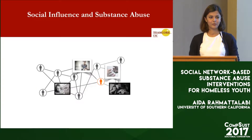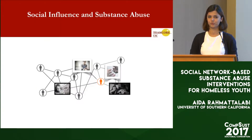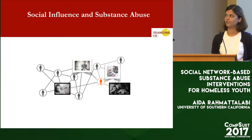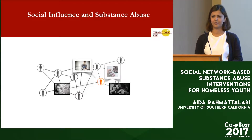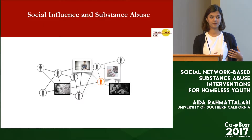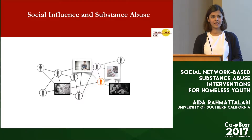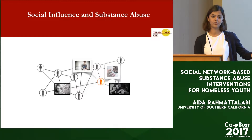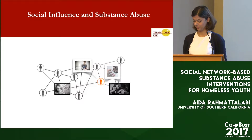Social networks have repeatedly been shown as significant covariates of substance use, meaning that, for example, if a person's group of friends has norms that favor using drugs, he's also very likely to start using. And of course, the opposite is also true — if he has many non-user friends, he's very likely to be reluctant to use.